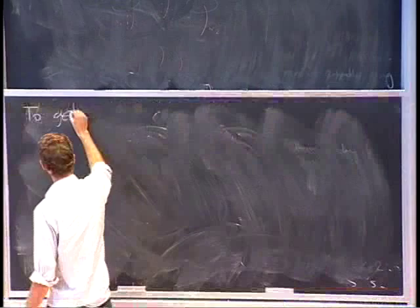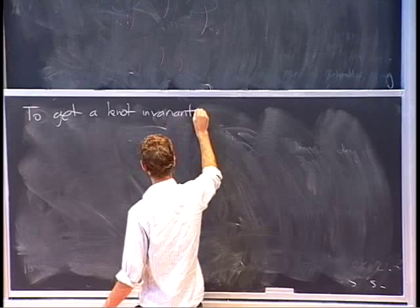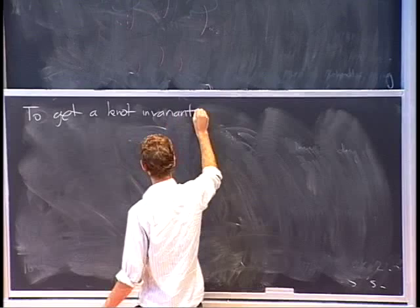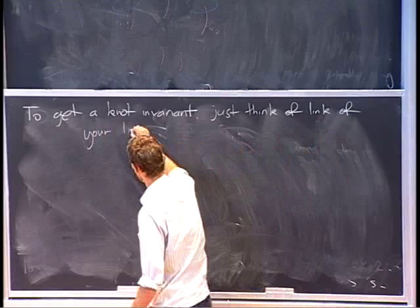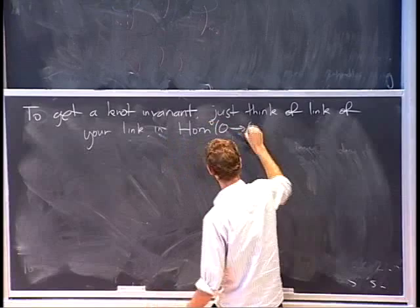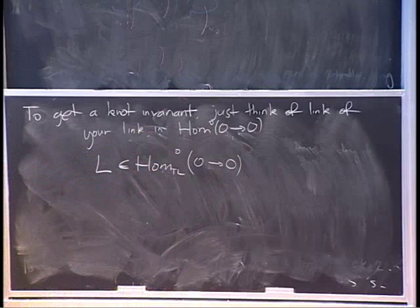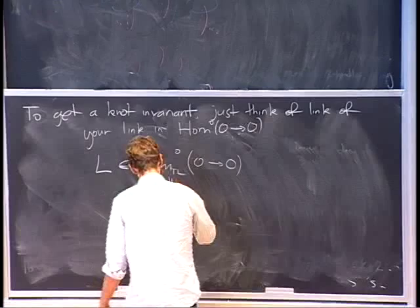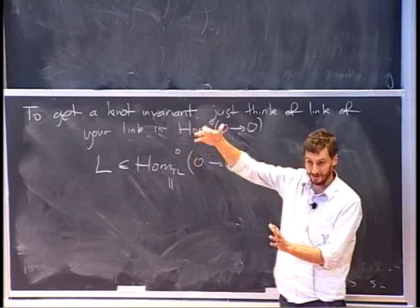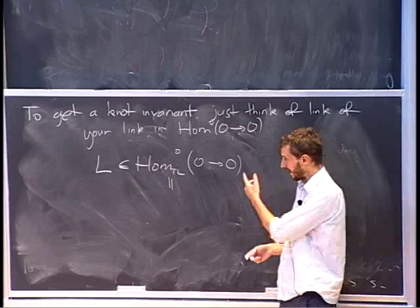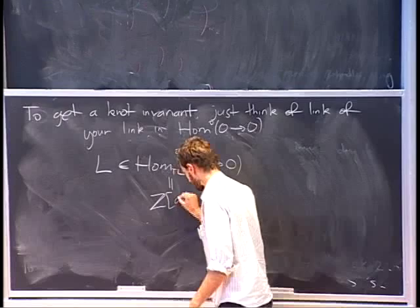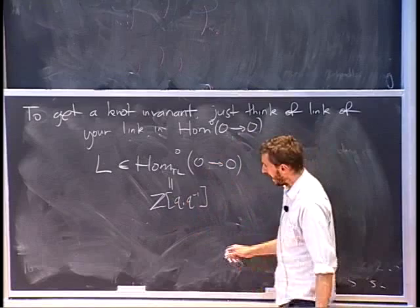To get a knot invariant, just think of your link in the hom space from zero points to zero points. Any link lives in there. In the case of Temperley-Lieb, a hom from zero to zero is just a bunch of circles, and each circle is just q plus q-inverse, so every diagram in this hom space is an element of Z[q, q-inverse]. This is the Jones polynomial.